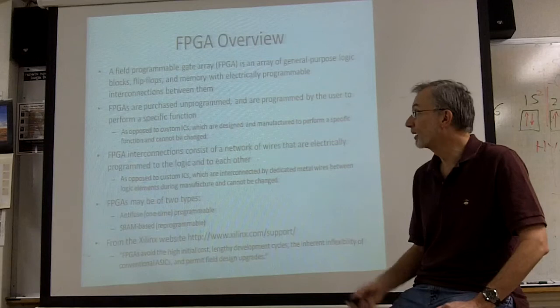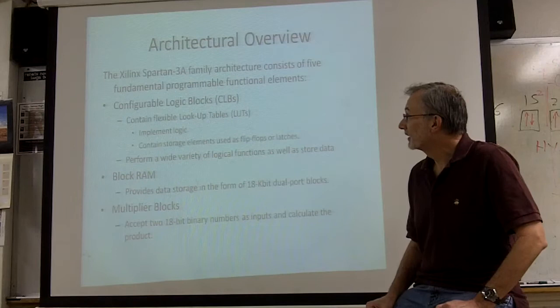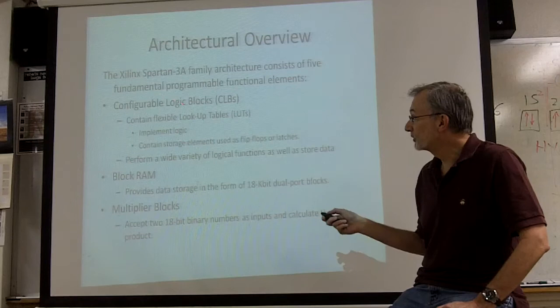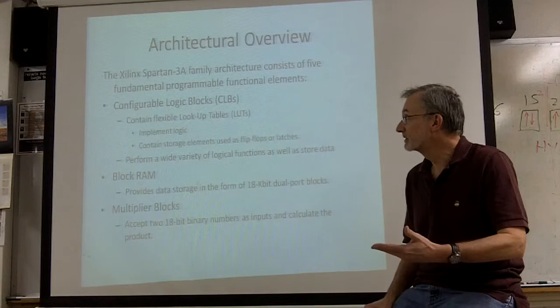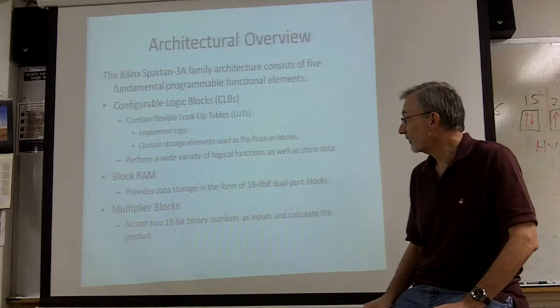We're going to talk about the Xilinx Spartan 3A, which is the FPGA that we're going to be using later on in the year. The FPGA consists of five different types of blocks. The first is the configurable logic blocks. This is where the logic is performed. The CLBs contain lookup tables, and we're going to talk about how the lookup tables work. They also contain storage elements, including flip-flops and latches. These configurable logic blocks form the core of the FPGA.